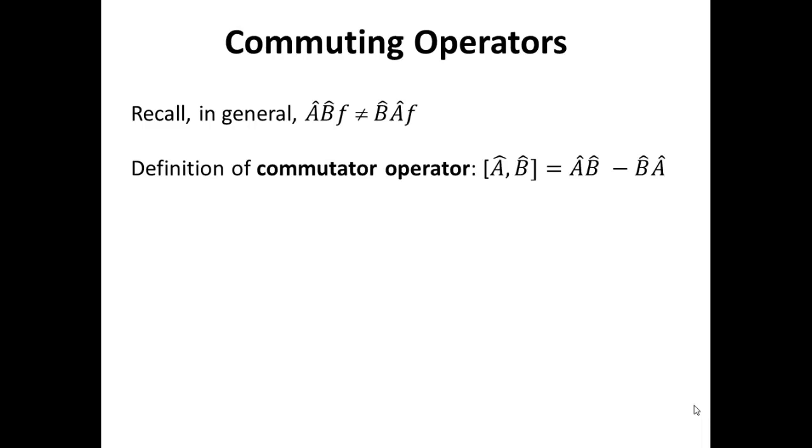We're going now to define what's called the commutator operator, and this is written down notation-wise as brackets with the two operators of interest written down inside with a comma between them. And it's defined simply as the action of the B̂ operator followed by the action of the Â operator on some function minus the reverse operation.